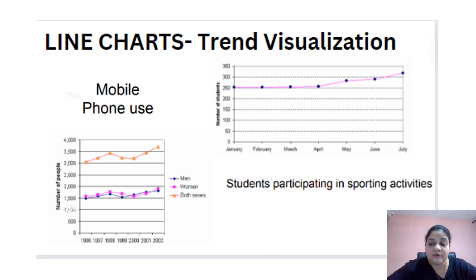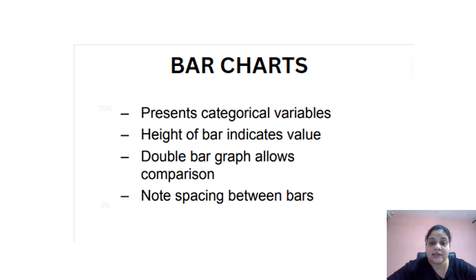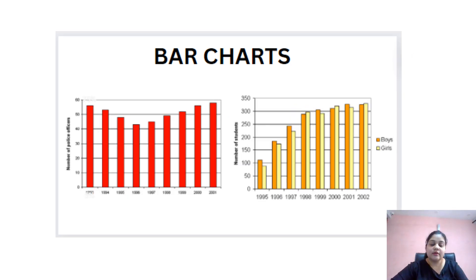The next type of graph is bar chart. Bar chart is basically used to represent categorical variables. The height of the bar represents the value of a particular variable. If you don't know what categorical variables are, you can check out my previous video — the link is attached. We have two types of bar chart: single column and multiple column. In single column, we analyze the behavior of one variable, and in multiple column, we analyze and compare the behavior of two variables.